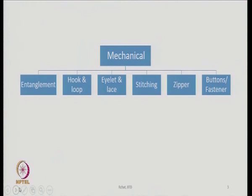The last one is buttons or fasteners. So we have six ways to join textile material mechanically.